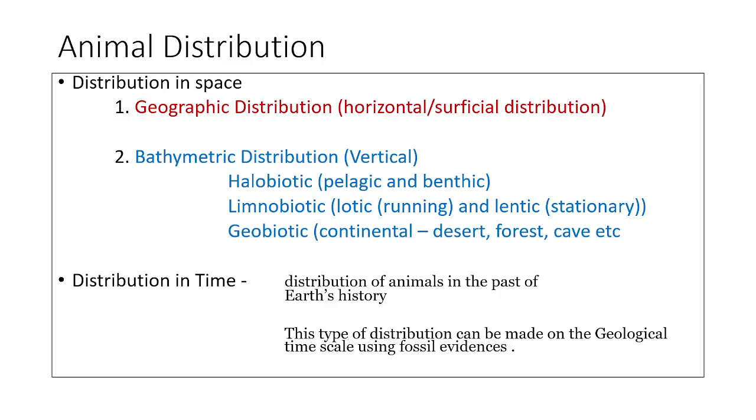Welcome to our discussion on animal distribution. Animals are not distributed uniformly throughout the world. Depending upon the climate, environment, availability of food, and type of food they eat, different animals are seen in different places. Some are seen only in particular places, some are seen universally. We will discuss this under two heads: distribution of animals in space and distribution of animals in time.